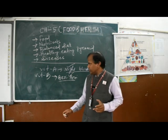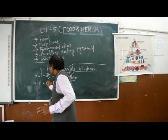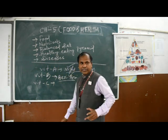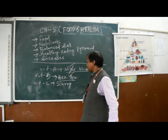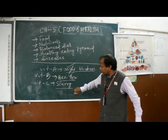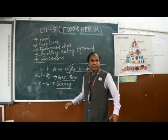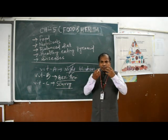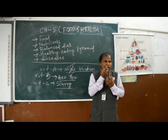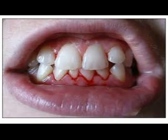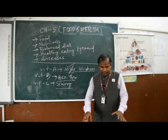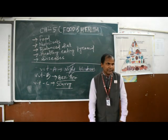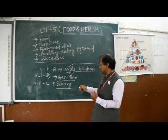Another deficiency disease is due to Vitamin C, and the disease is called scurvy. How will you know a person is suffering from scurvy? If the gums are swollen and blood comes out while brushing, that is a symptom of scurvy. Joint pain is also a symptom of scurvy.